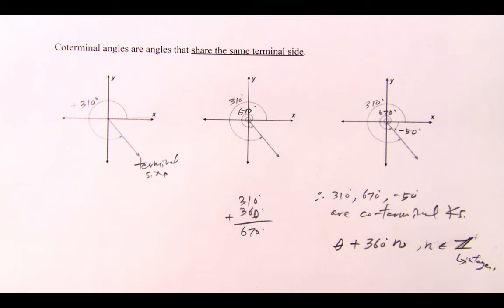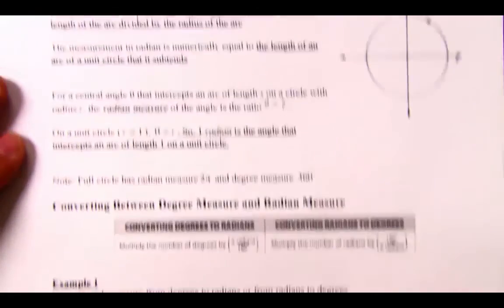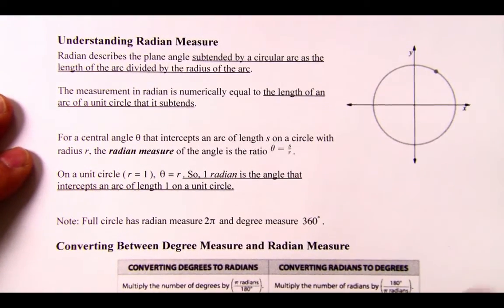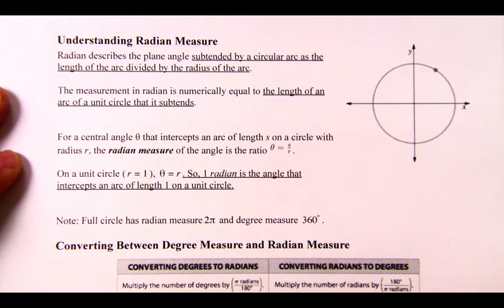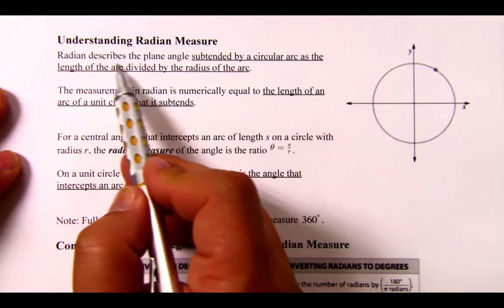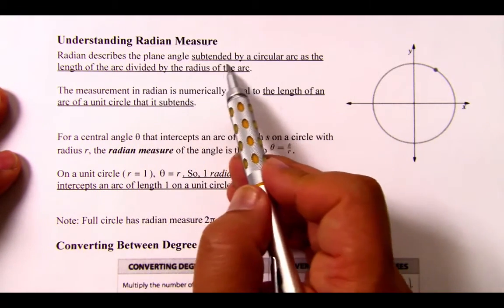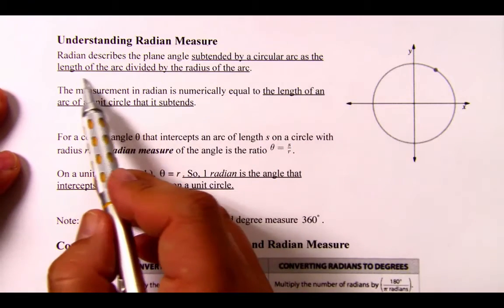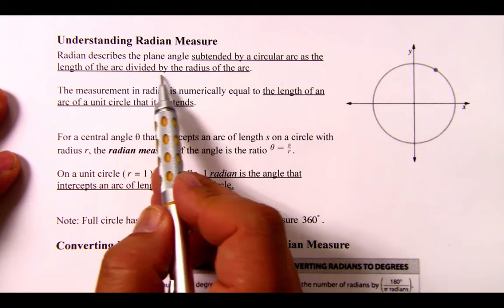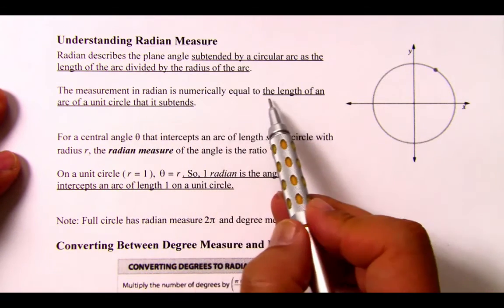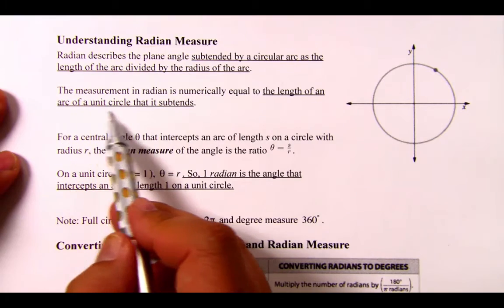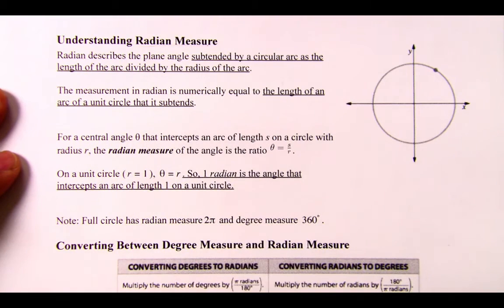So now that we've defined what they are, let's talk about arc measure. So I've mentioned the word arc measure, and yet the title says radian measure. Well, they're really related. Everything that's underlined you should be copying down. Now, the radian describes a plane angle subtended by a circular arc as the length of the arc divided by the radius of the arc. And the measurement of the radian is numerically equal to the length of an arc of a unit circle that it subtends.